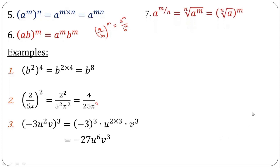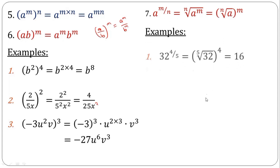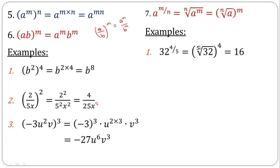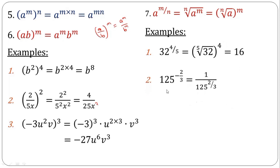The last rule to consider is the fractional index rule. It says that when a number is raised to the power of a fraction, take the denominator to form a root and the numerator forms a power. Look at the examples: 32 raised to the power of 4 over 5 — take the denominator 5 to form a fifth root, and everything is raised to the numerator power of 4. The fifth root of 32 is 2, and 2 raised to the power of 4 is 16. The second example involves a negative fractional index, so first apply the negative index rule.